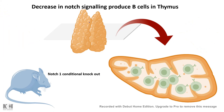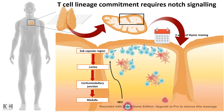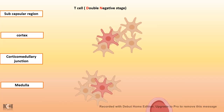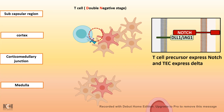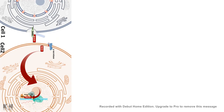In the loss-of-function or knockout situation, B cells are found present in the thymus — where you would normally expect T cells. In this Notch1 conditional knockout, huge numbers of B cells are found in the thymus. This evidence together suggests that T cell lineage commitment requires Notch signaling. Research shows that inside the thymus, thymic epithelial cells interact with T cells at their double-negative stage. At this stage, the T cell expresses Notch while the thymic epithelial cell expresses Delta. This Notch-Delta interaction leads to T cell lineage commitment.